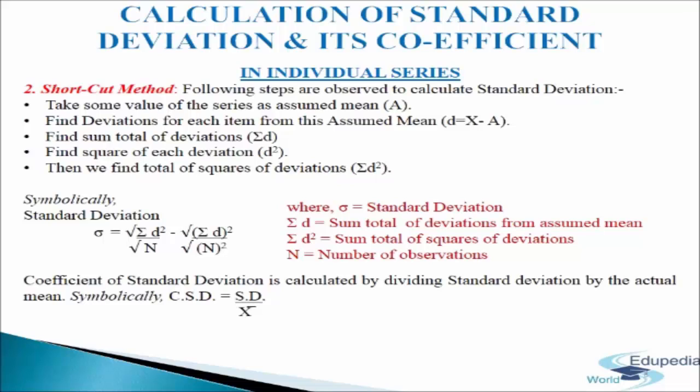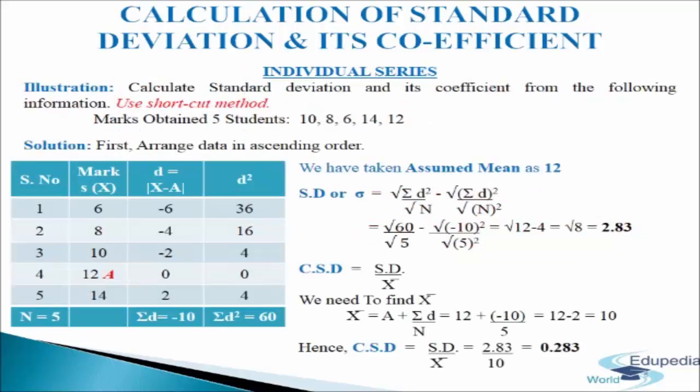The coefficient of standard deviation is calculated by dividing the standard deviation by the actual mean. Symbolically, CSD = SD / mean. Let us understand the shortcut method with the help of the following illustration.